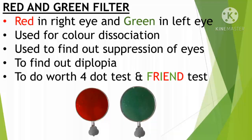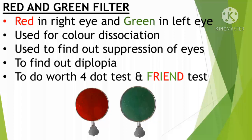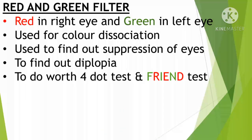Red and Green filters are used in cases of suppression and diplopia. The Red and Green filter is also used in the Worth 4-Dot Test and Foveal Test. During testing, the Red filter is placed in the right eye and the Green filter is placed in the left eye.